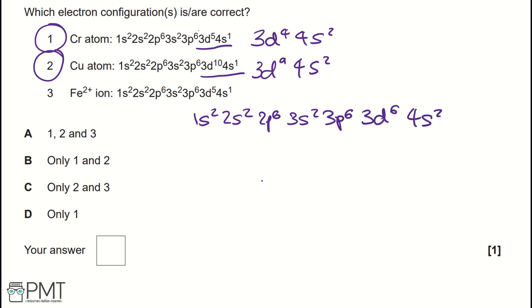Now, the 4s2 electrons are added first, but they're also removed first. So if we were to create the iron 2 plus ion, we would lose our 4s electrons, making the correct electron configuration 1s2, 2s2, 2p6, 3s2, 3p6, 3d6 for iron 2 plus.